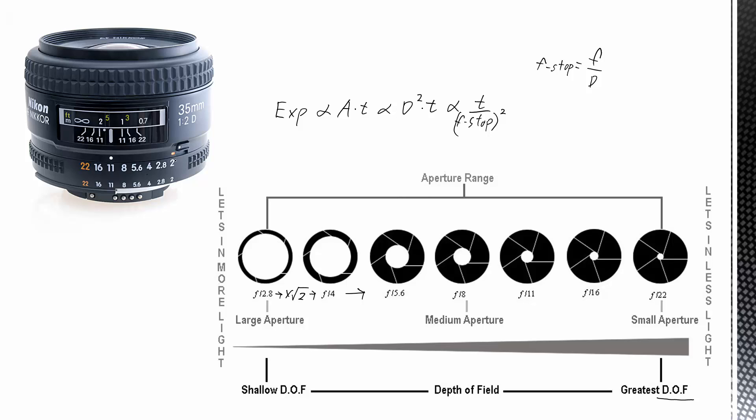By the way, here's a picture of a lens. These are the f-stop values here. So you can actually adjust those right on the lens. All right, on to the calculations.